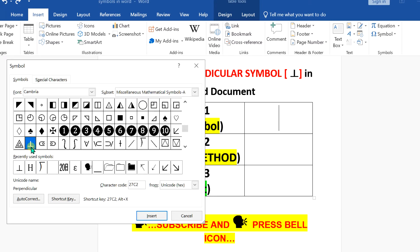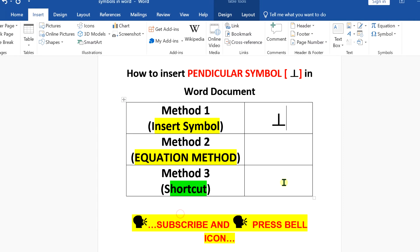After clicking on this symbol, the box will turn blue, which indicates that you have selected the symbol. Then press Insert to insert the perpendicular symbol.